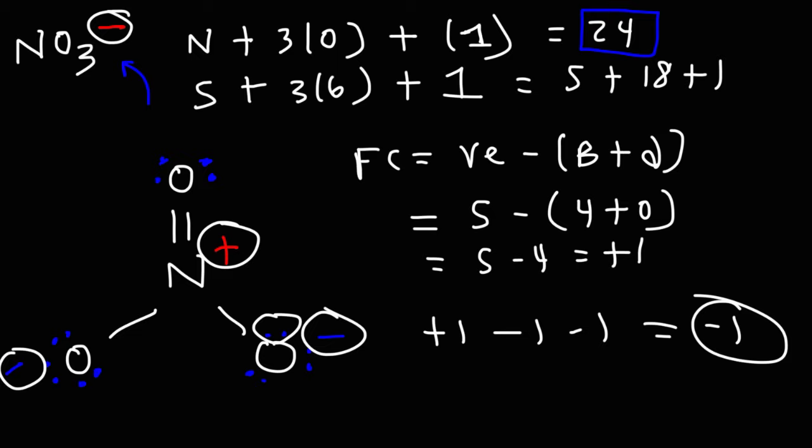If that number doesn't match up, something is wrong. We messed up somewhere. But the fact that they do match up tells us that we are on the right track. So that's how you could determine the formal charge on each element in a Lewis structure.